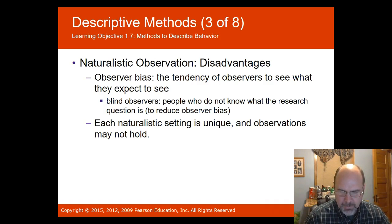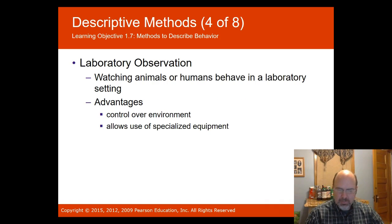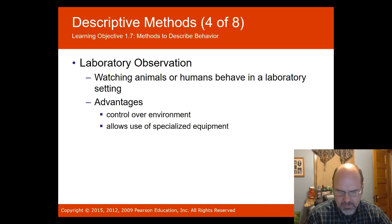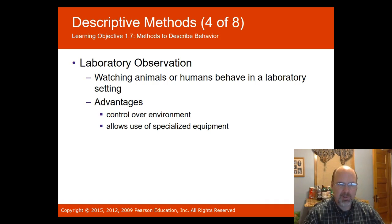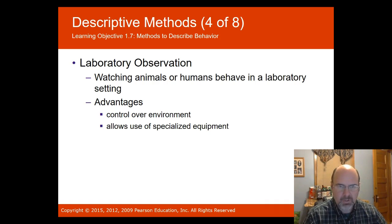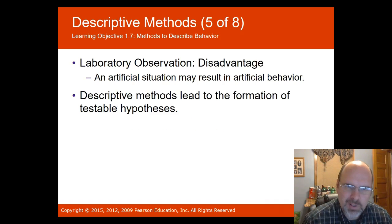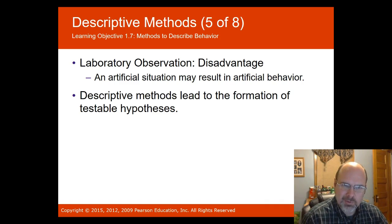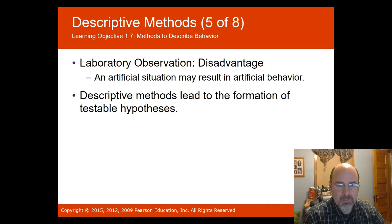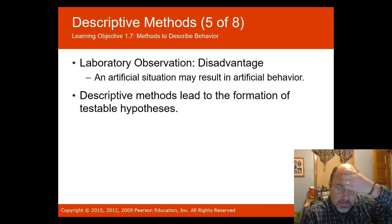Laboratory observation, unlike naturalistic observation, is done in a laboratory setting. Advantages include greater control of the environment and the use of special equipment like one-way glass. A disadvantage is that the artificial situation might result in artificial behavior. Descriptive methods may lead to the formation of testable hypotheses.